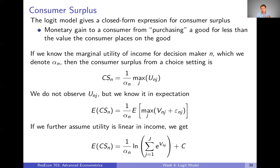The problem is we don't actually observe utility — that's why we need a random utility model. But we can know it in expectation. We plug in representative utility and account for the random utility component, then take the expectation. If we assume utility is linear in income — meaning alpha is a constant parameter for each individual — then our expected consumer surplus for decision maker n is: (1/alpha_n) times the log of the sum of exponentials of the representative utilities V_ni across all alternatives i.